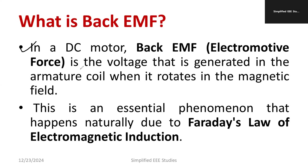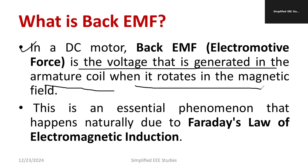Back EMF is a voltage that is generated in the armature coil when it rotates in the magnetic field, because the rotating part is the armature. Whenever the armature is rotating, an EMF is produced inside the armature — that is called back EMF. The back EMF which is generated will oppose the applied voltage, because in the case of a motor the applied voltage is electrical energy. So whatever EMF is generated in the armature, it opposes the applied voltage.